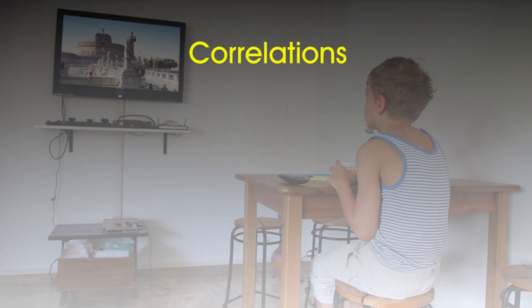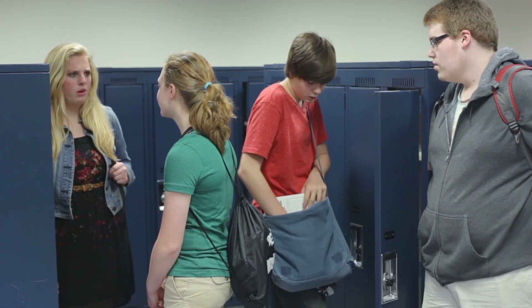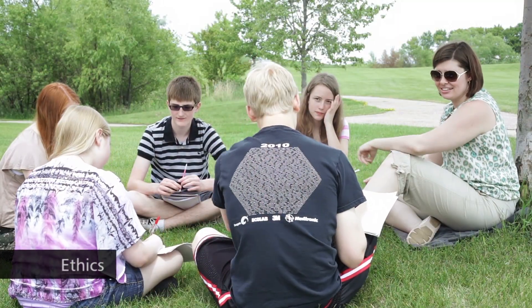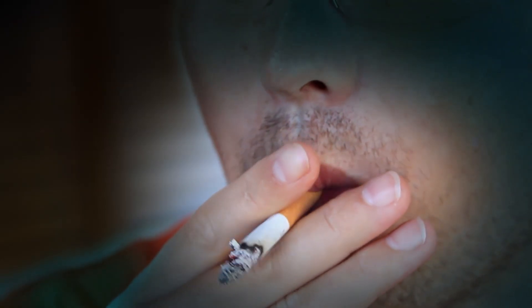Correlations can still produce valuable data which may suggest hypotheses that can be tested by further research. You can impress examiners further by adding that causation can be tested with an experimental design, where the effect of one variable on another can be tested under more controlled conditions. Although correlational research isn't usually brought into ethics questions, there may be ethical issues in socially sensitive research, such as correlations of ethnicity and intelligence, or socioeconomic status and health behaviour.